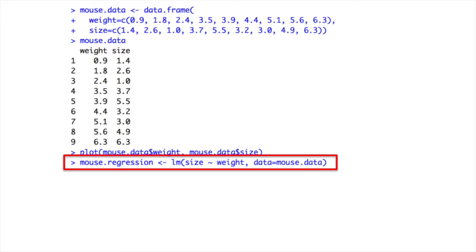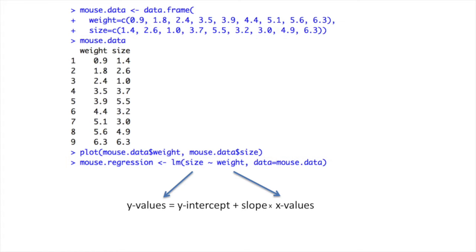This is where I set up the actual linear regression. I call the function LM, which stands for Linear Models, and I pass it a formula and the mouse data. The way I've specified the formula means that size are considered to be the Y values and weight are considered to be the X values. The Linear Models function then calculates the least squares estimates for the Y intercept and the slope.